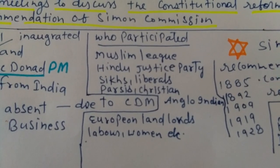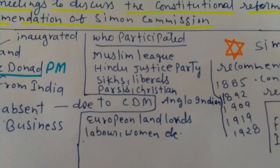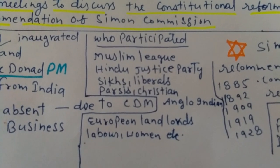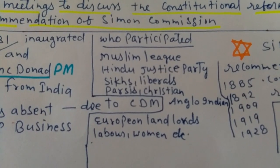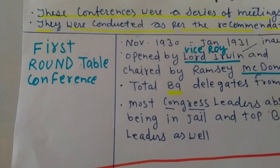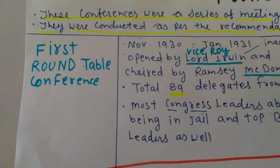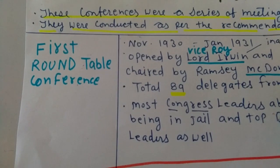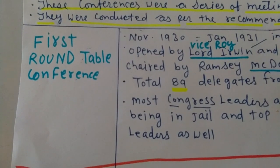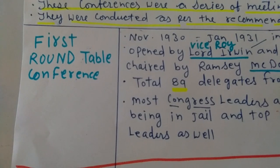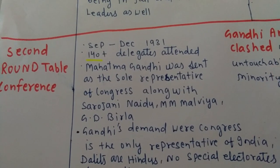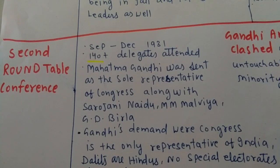The British had given a welcome and invitation to all these groups to join the First Roundtable Conference. The British knew very well that the Indians were very willing to join this conference, and that is why they welcomed all people from India.